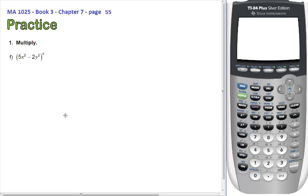Good day students. We're going to look at a solution now to number 1F, page 55, chapter 7 in book 3 of your Math 1025 booklets. This question is asking us to multiply, and you can see that it's a binomial, and the binomial is squared.